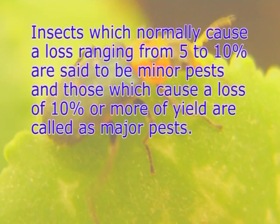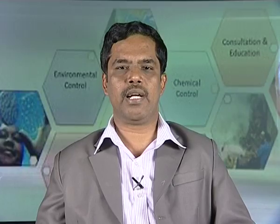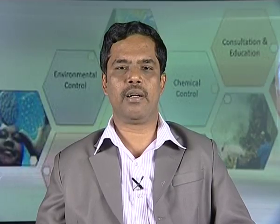Insects which normally cause a loss ranging from 5 to 10 percent are said to be minor pests. Those which cause a loss of 10 percent or more of yield are called major pests. The pest status of an insect species may be determined by a number of ways.